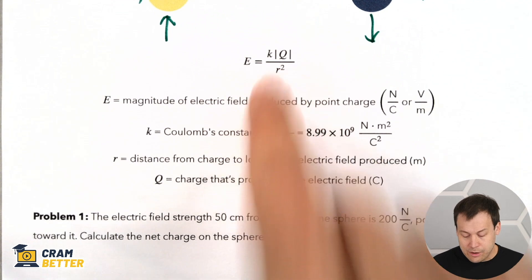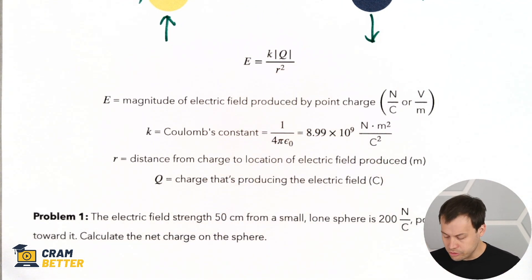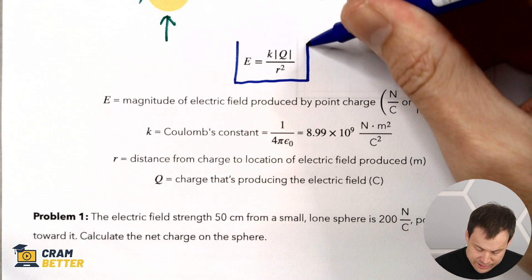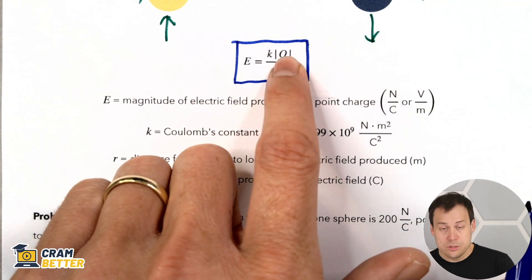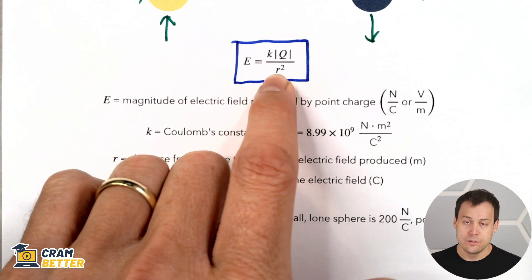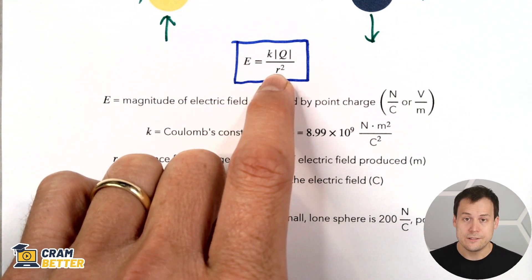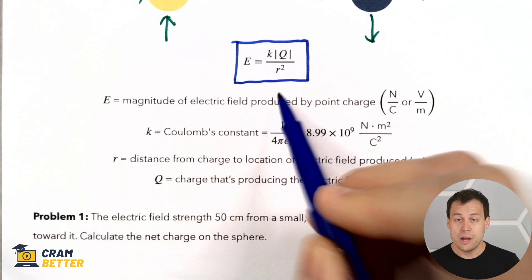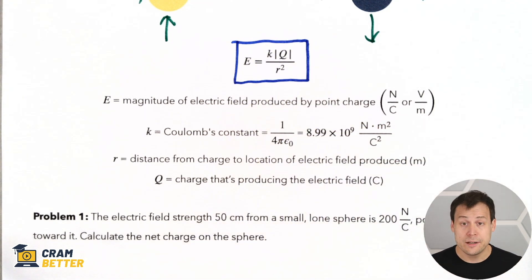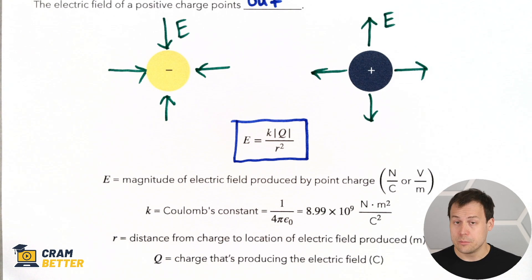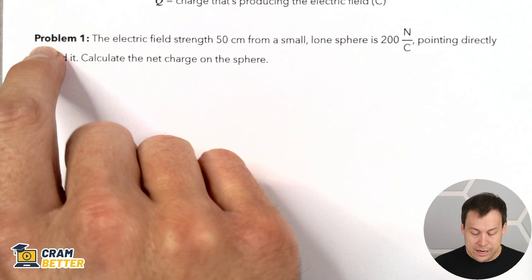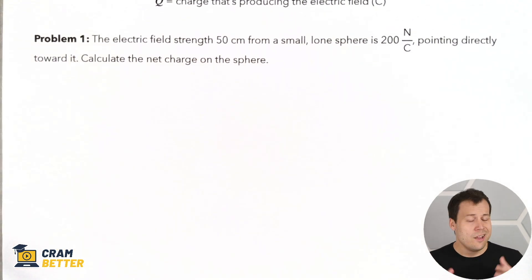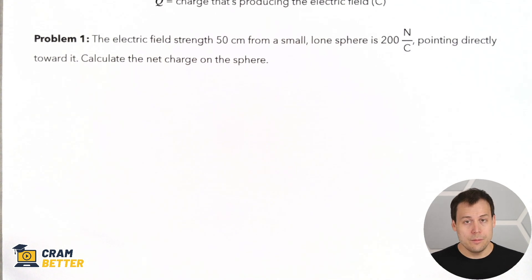Let's go over the formula for calculating the strength of the electric field that comes from a charge. It's K — Coulomb's constant — times the absolute value of the charge itself, divided by the distance from the charge to wherever you're measuring its field, squared. The charge is absolute value, so whatever you get out of this formula comes out positive no matter what — it's just a magnitude. It's up to you to look at your picture and determine the direction based on whether it's a positive or negative charge. Let's try a pretty easy problem — pause the video, try it on your own, and hit play when you're ready to see the solution.